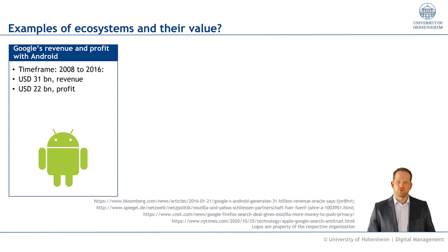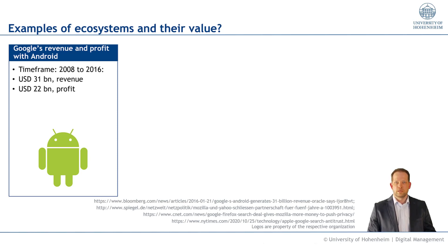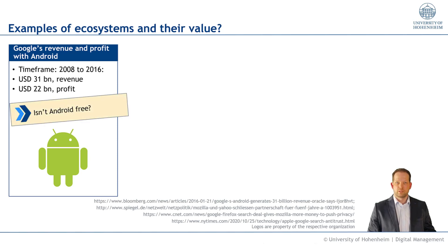In the timeframe from 2008 to 2016, Google made about 31 billion US dollars in revenue and about 22 billion US dollars in profit with the Android operating system. When you see 22 billion profit from 31 billion in revenues, that makes a pretty good profit margin. But how come Google earns money with the Android operating system? Isn't Android free?